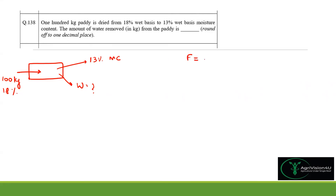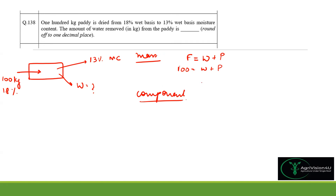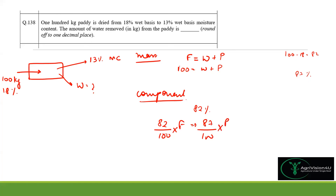Using mass balance: Feed = Water removed + Product. Feed is 100 kg. For component balance on dry solids: the feed has 100 − 18 = 82% solids, and the product has 100 − 13 = 87% solids. So: (82/100) × 100 = (87/100) × Product, giving Product = (82/87) × 100 ≈ 94.25 kg of dried paddy.